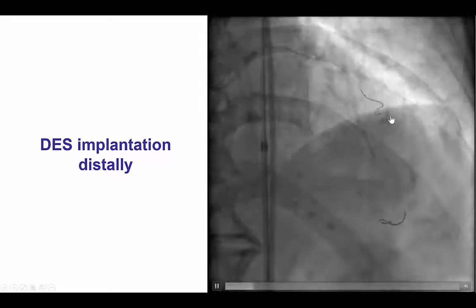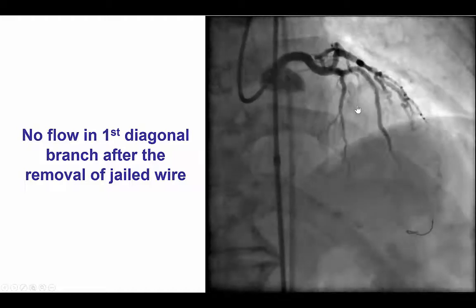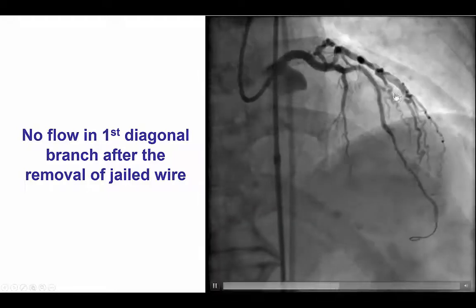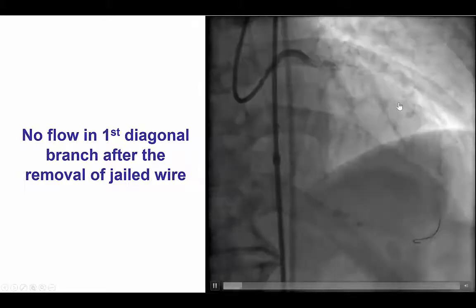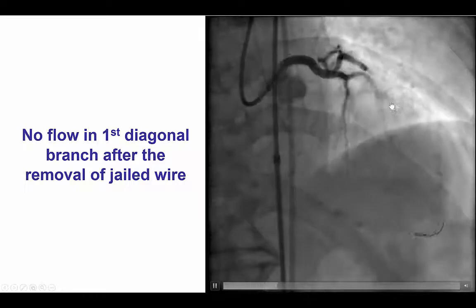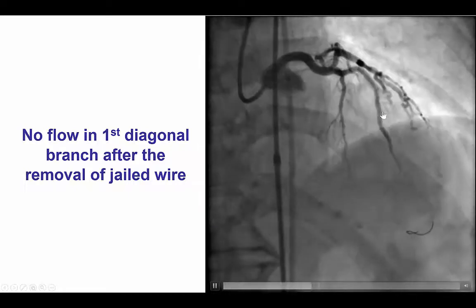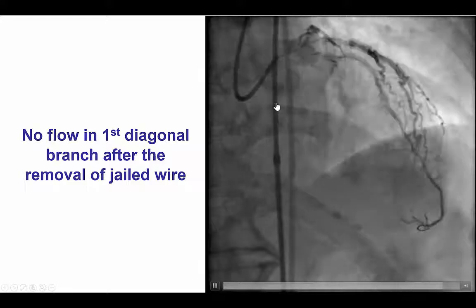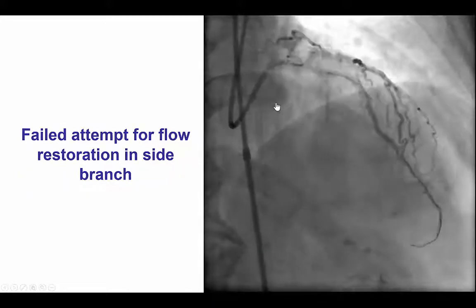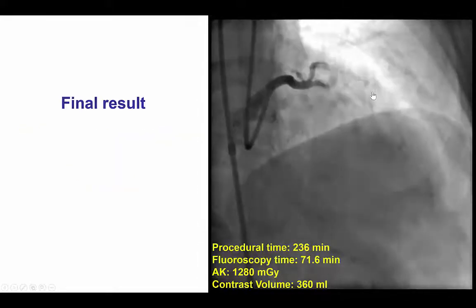We did jail the wire into the diagonal branch as a safety precaution. There was flow initially, and there was still some flow into there. But then once we post-dilated, we did lose the flow in the diagonal branch — the lesson being that we should have probably rewired the diagonal branch before performing aggressive high-pressure post-dilations in the mid-LAD. We did several attempts to recross into the branch; however, we were unsuccessful and it was finally abandoned.